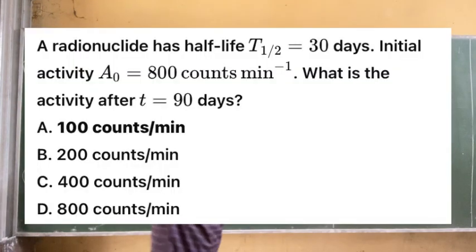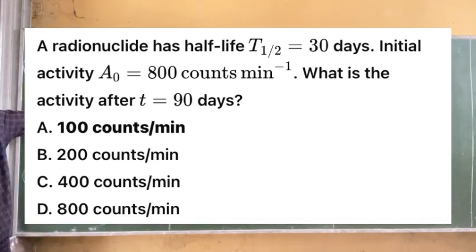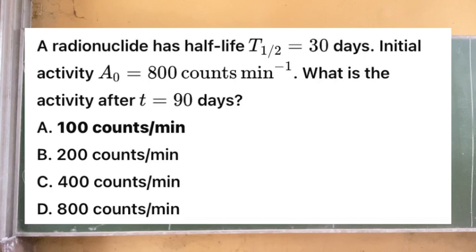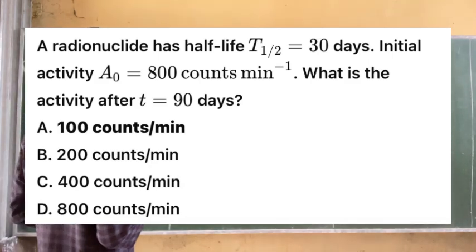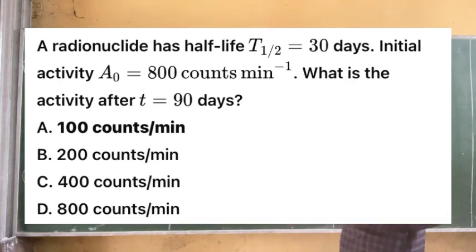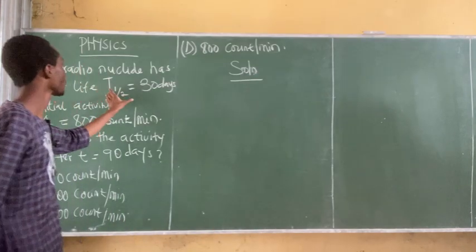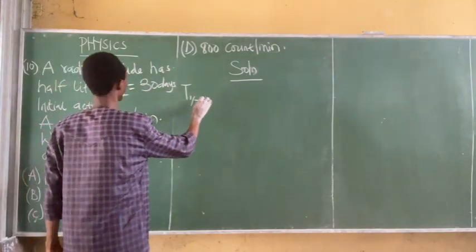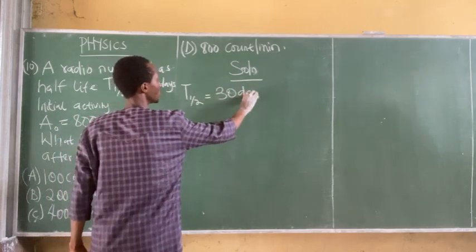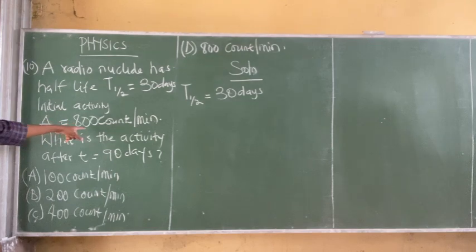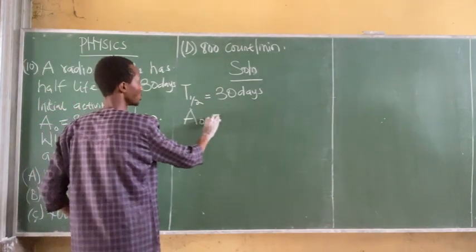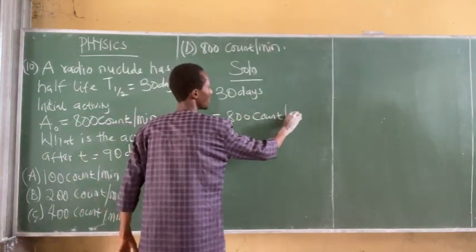Question 10: A radionuclide has a half-life of 30 days and an initial activity of 800 counts per minute. What is the activity after 90 days? Option A: 100 counts per minute. Option B: 200 counts per minute. Option C: 400 counts per minute. Option D: 800 counts per minute. From the question, the half-life is 30 days and the initial activity A-naught is 800 counts per minute.